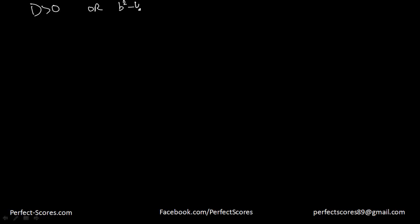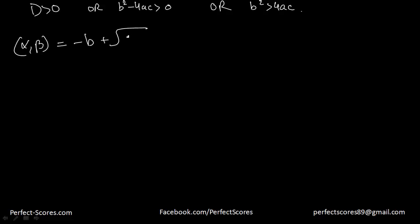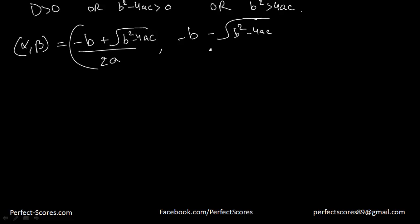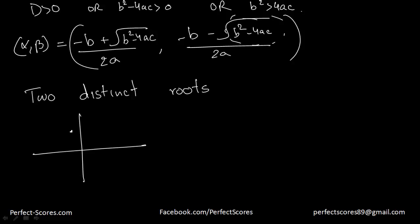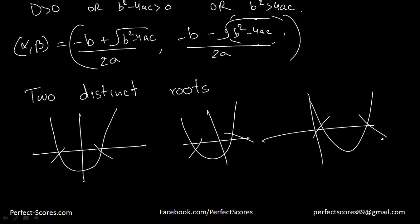What if the value of the discriminant is greater than 0, which means b squared minus 4ac is greater than 0, which means b squared is greater than 4ac? Then your roots are going to be minus b plus something and minus b minus something, because this value is a positive number. That means you are going to have two distinct roots, and your graph will cross the x-axis twice. In this case, the roots are real because the graph is crossing the x-axis.